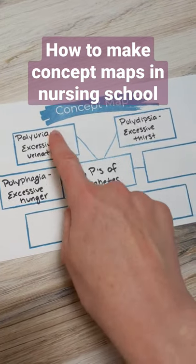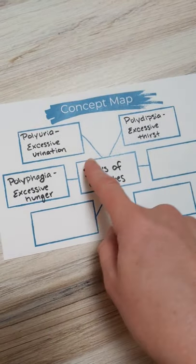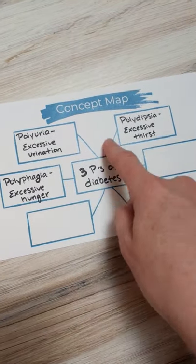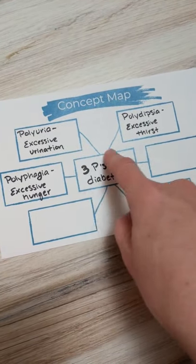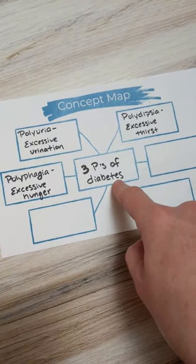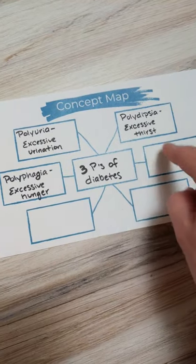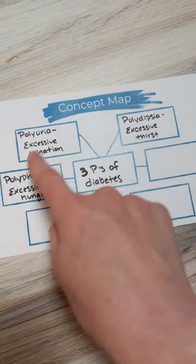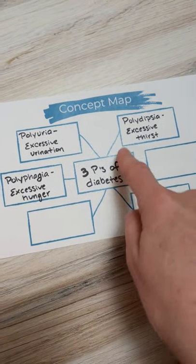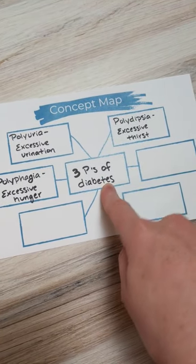How to make concept maps in nursing school. The topic of what you are studying should go right in the middle of your concept map, and then all the boxes around it should be things that are related to that one key topic.